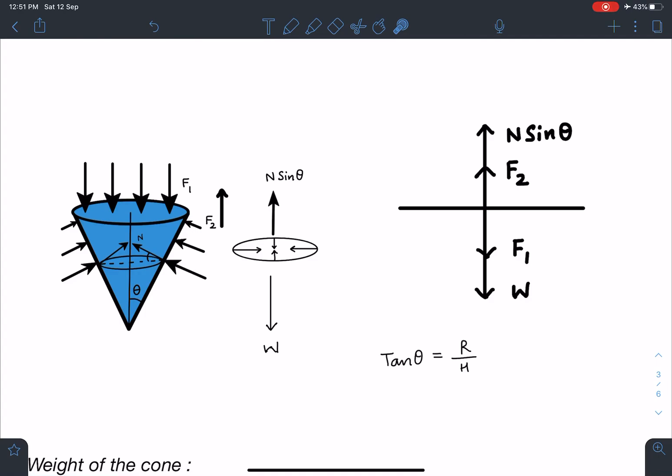So now I'll draw the free body diagram of this cone. The forces which are acting on the cone is due to the liquid which is present on the surface above. This I am calling this force as F1. Similarly, on this curved part, the liquid is applying some force on the cone as well, and there is this normal reaction which is acting perpendicular to the surface, and then another force is the weight of the cone.